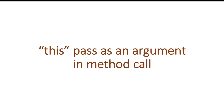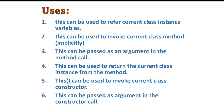Hello everyone. In the previous videos I explained what the 'this' keyword is, how it can be used to refer to current class instance variables, and how it can be used to invoke the current class method. If you haven't watched the previous videos, don't worry — I will provide a link in the description. In this video, I am going to explain how this keyword can be used to pass as an argument in a method call.